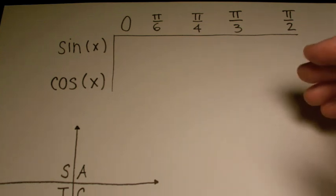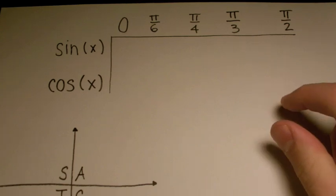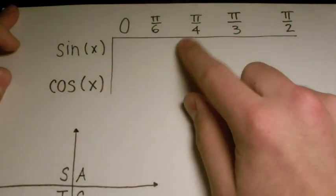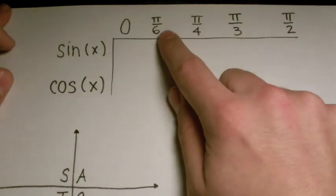Basically, on any test you might take or any homework you might have where they ask you to compute trig without a calculator, they're going to give you basically one of these five angles here: 0, π/6, π/4, π/3, π/2, and maybe there will be a different number in front of the π.